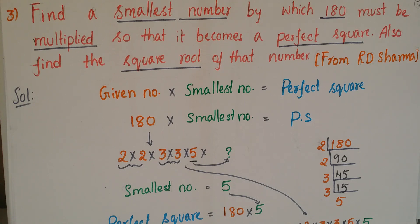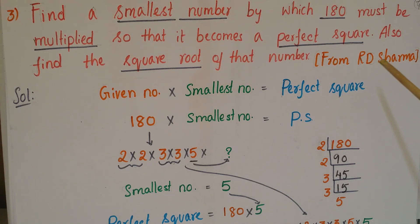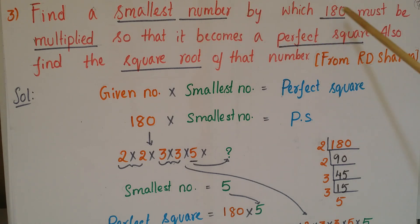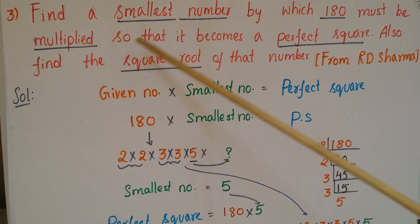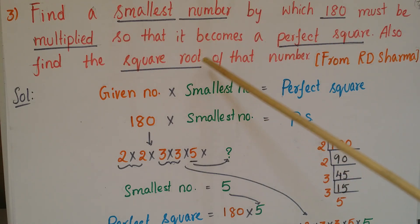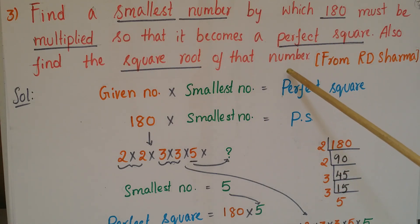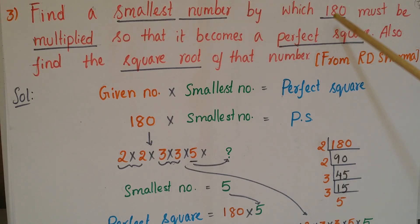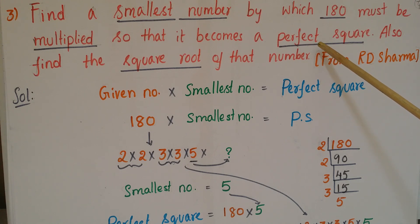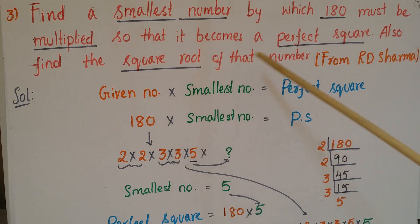Let us go through another problem. This is problem 3 from R.D. Sharma: find the smallest number by which 180 must be multiplied so that it becomes a perfect square, and also find the square root of that number. The given number is 180. We have to find the smallest number, the perfect square, and also the square root of the perfect square.